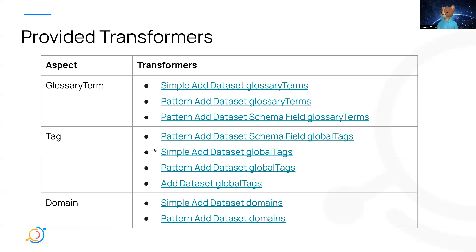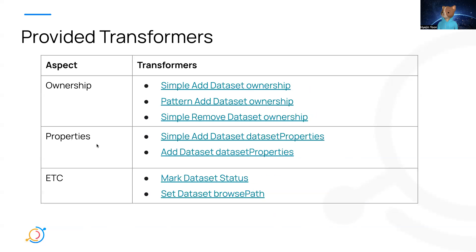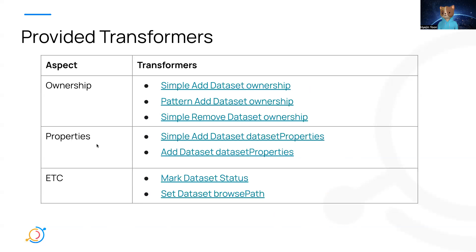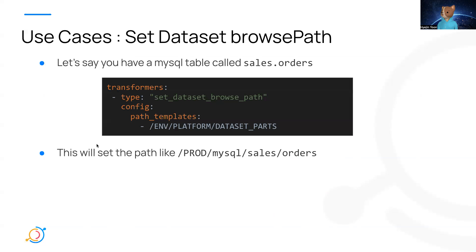Here's a quick overview of the provided transformer names. You can add glossary terms, tags, domains, ownerships, and properties, mark dataset status, and set browse paths. It's also possible to define your own customized transformer, so there's a lot of flexibility.